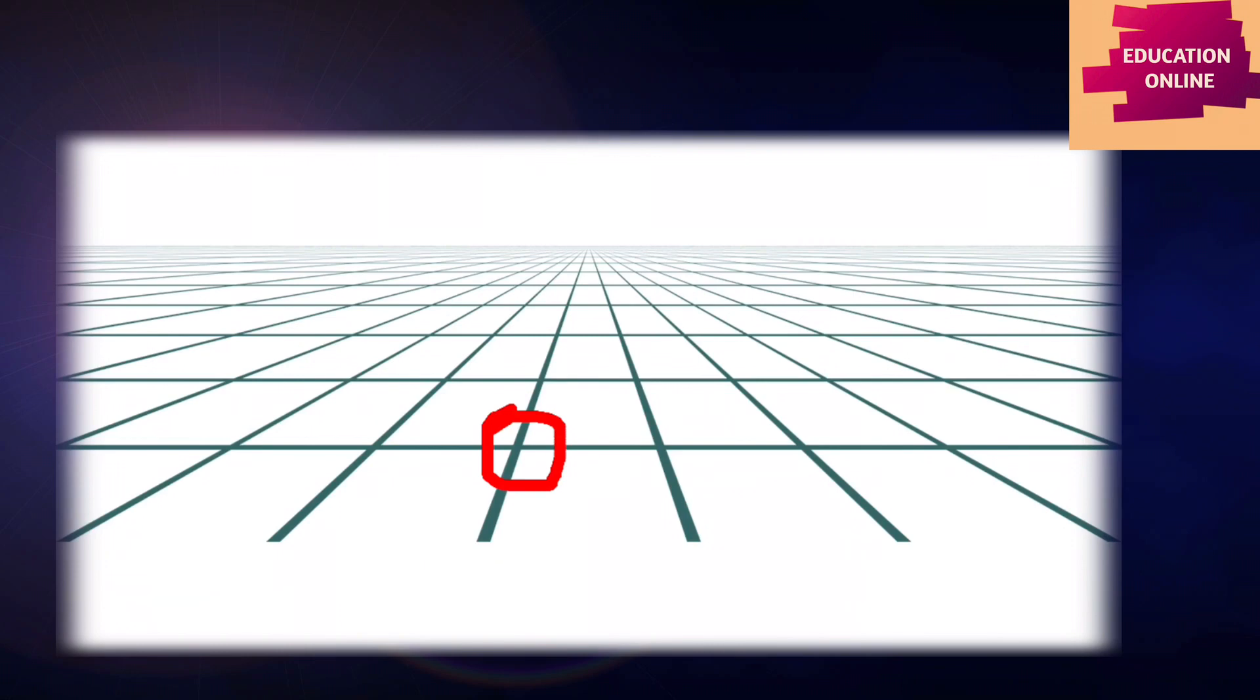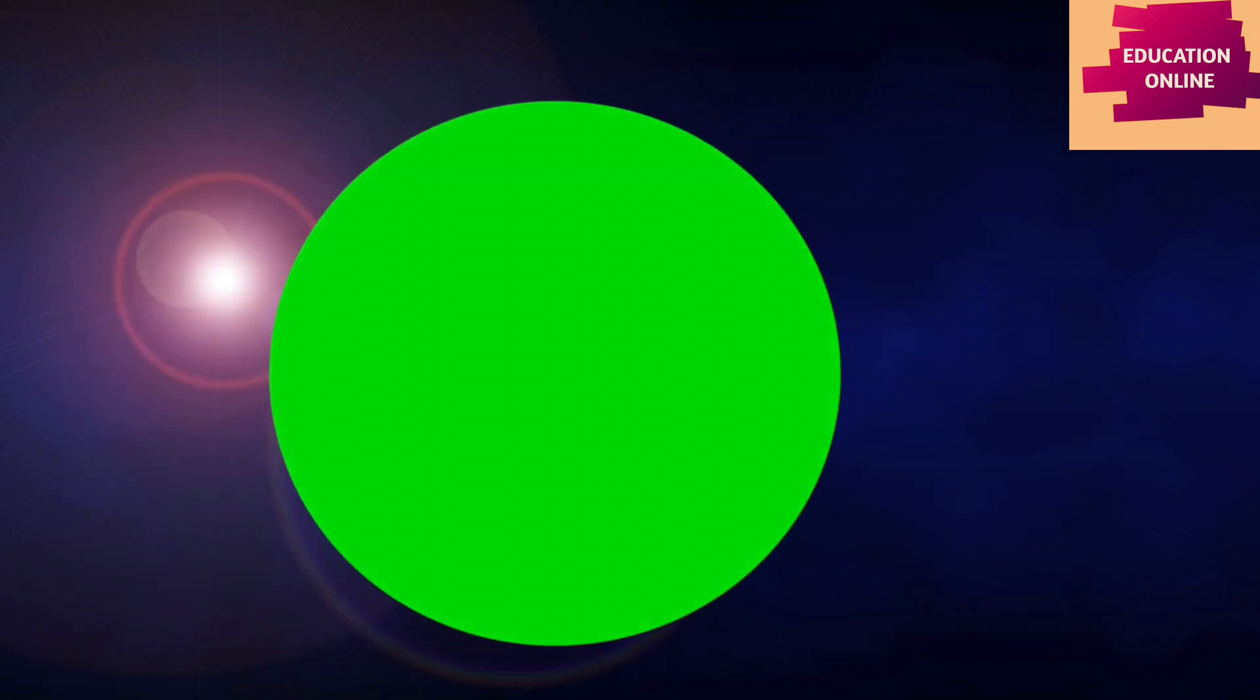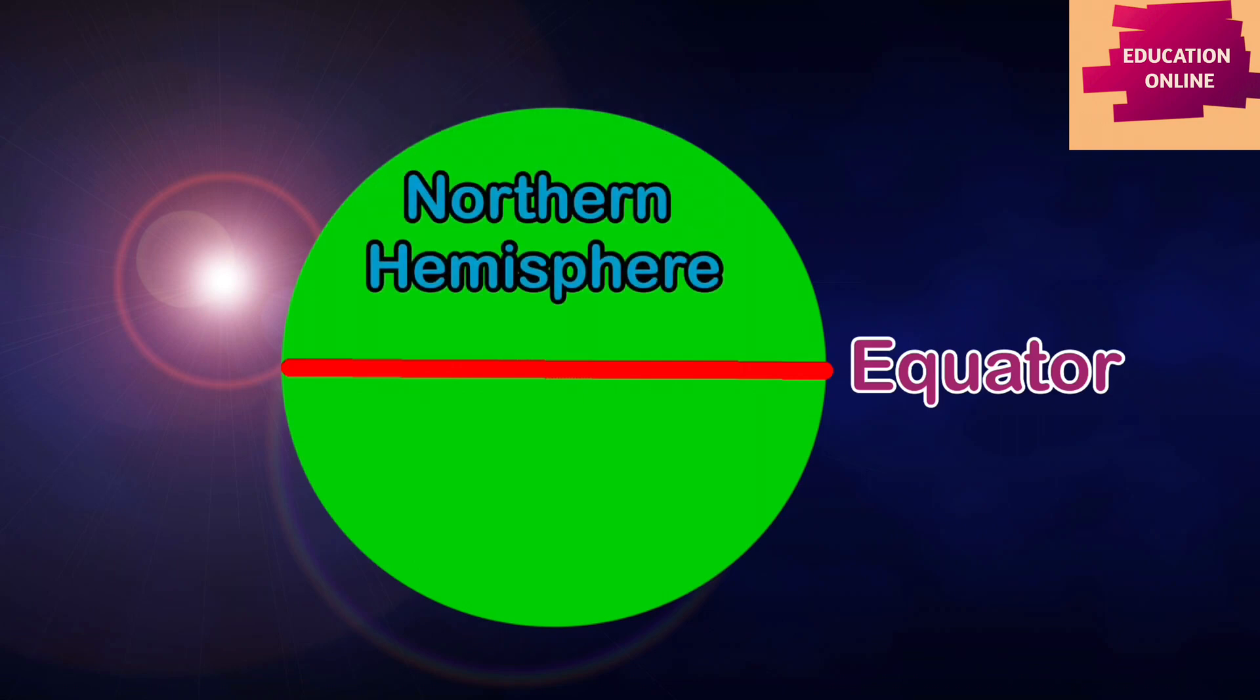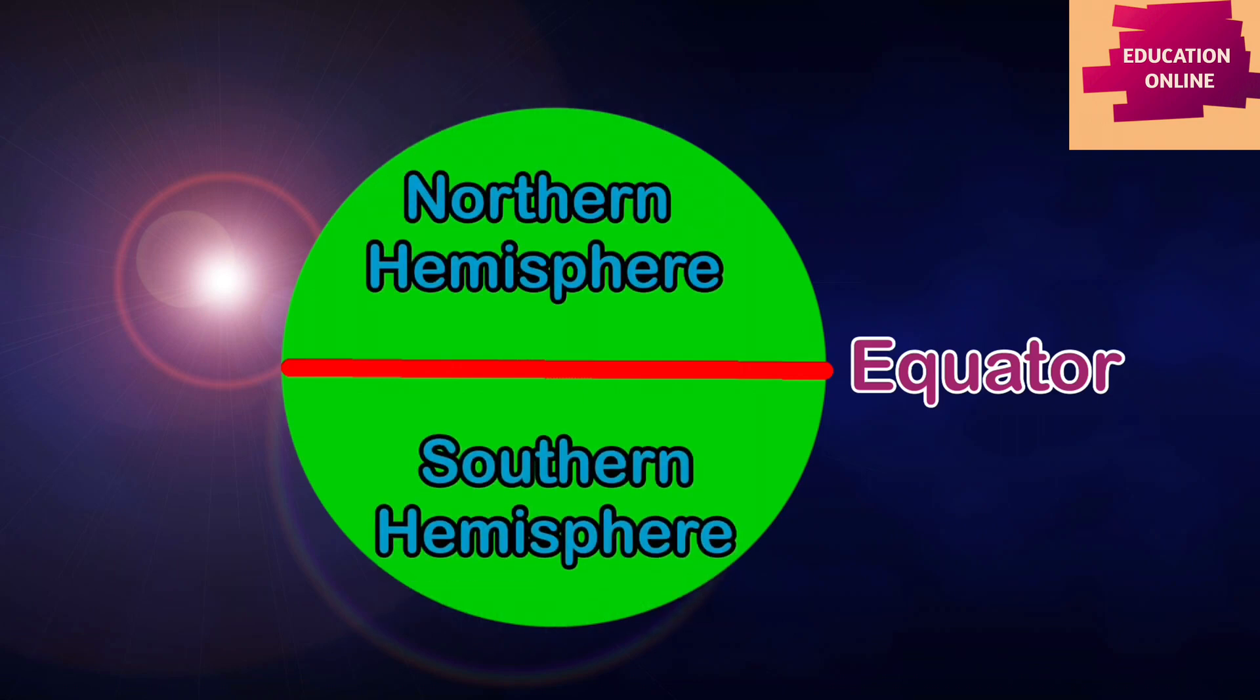The latitude and longitude of a place are called the coordinates. The most important line of latitude is the equator. It divides the earth into two equal halves: the upper half is called the northern hemisphere and the lower half is known as the southern hemisphere.